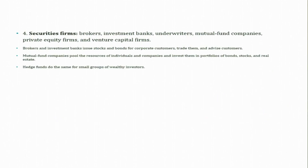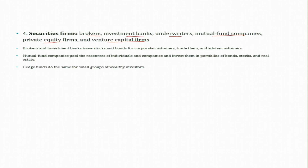Another group of financial intermediaries is securities firms, which include brokers, investment banks, underwriters, mutual fund companies, private equity firms, and venture capital firms. Brokers and investment banks issue stocks and bonds for corporate customers, trade them, and advise customers. Mutual fund companies pool the resources of individuals and companies and invest them in portfolios of bonds, stocks, and real estate. Hedge funds do the same for a small group of wealthy investors. We will discuss these firms in appropriate context throughout the course.